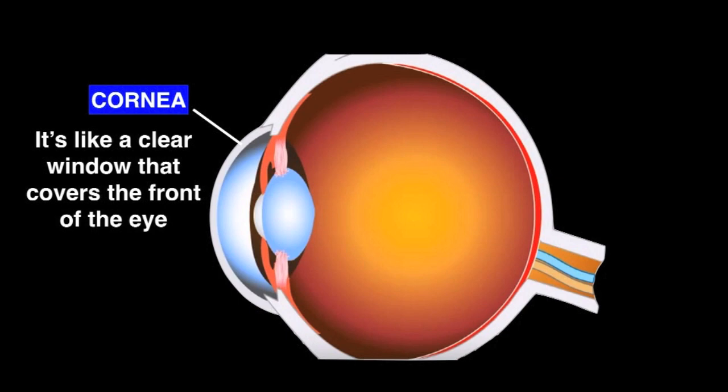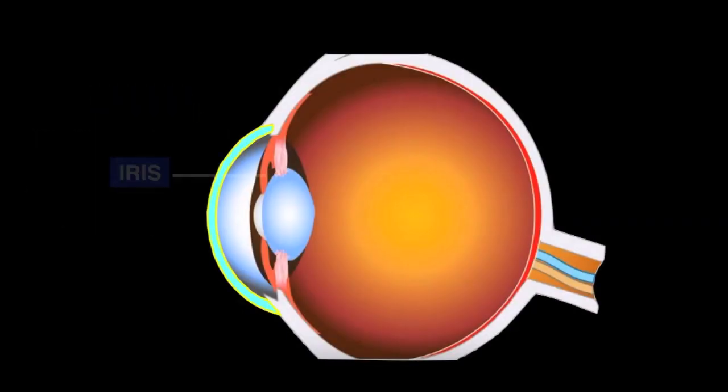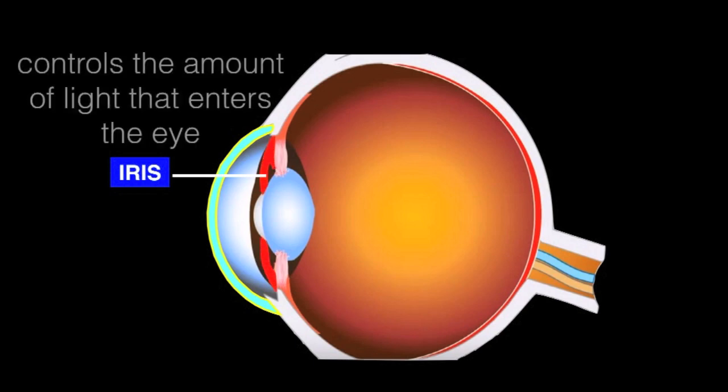The cornea is like a clear window that covers the front of the eye. This part is called the iris.